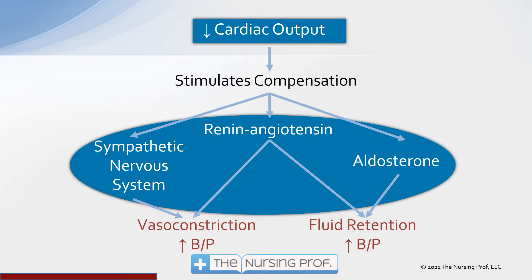If someone is dehydrated and has decreased cardiac output, these compensatory mechanisms work — vasoconstriction and fluid retention raise blood pressure effectively. But in heart failure, the heart can't work any better. So now vasoconstriction and fluid retention are working against the heart: it has to pump against increased resistance, pump faster from sympathetic stimulation, and handle more retained fluid — all while already not working well. So the heart fails and continues to fail.